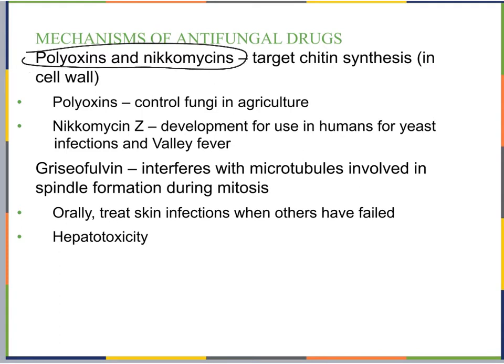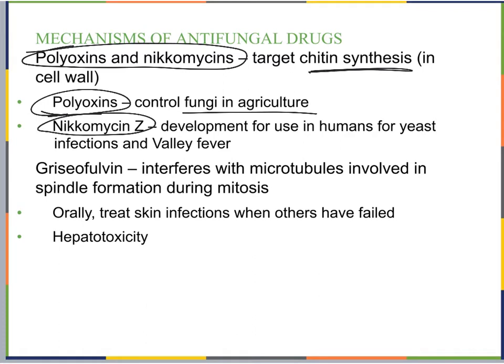Polyoxins and nikkomycins target chitin synthesis. Since fungal cells have cell walls made of chitin — a difference from our cells — we can try to attack that. Polyoxins are often used in agriculture to control fungi on crops and seeds. Nikkomycin Z is for use in humans, for yeast infections and valley fever.